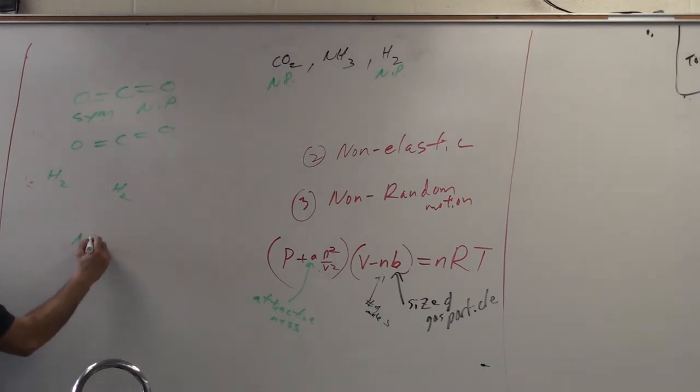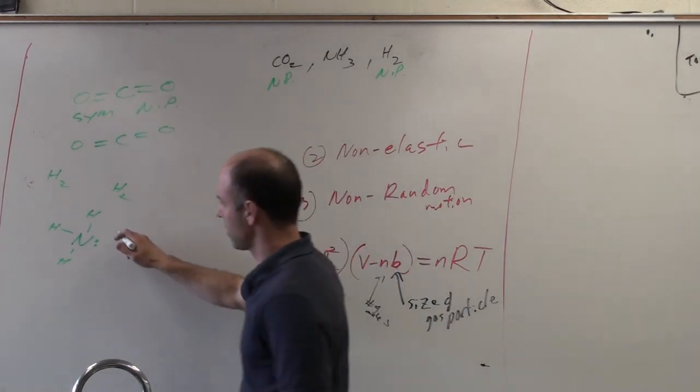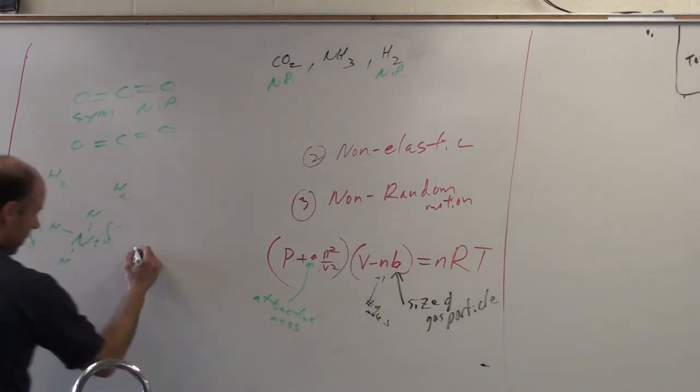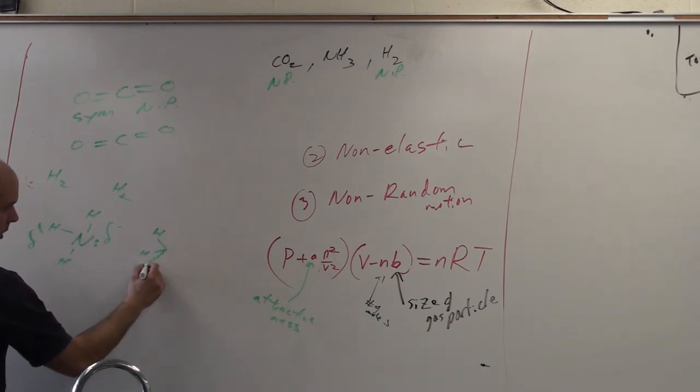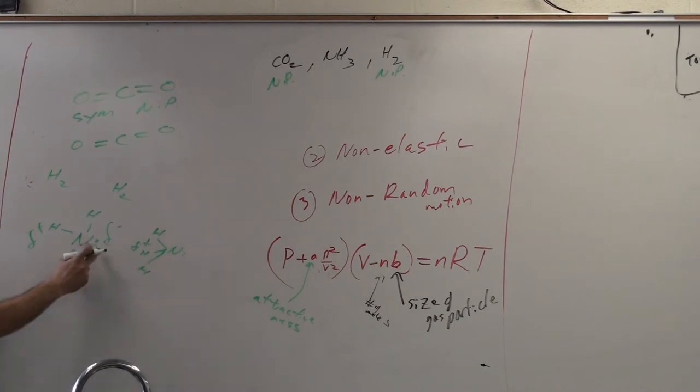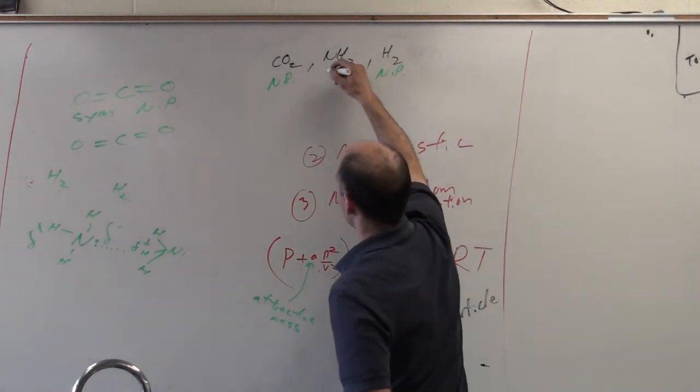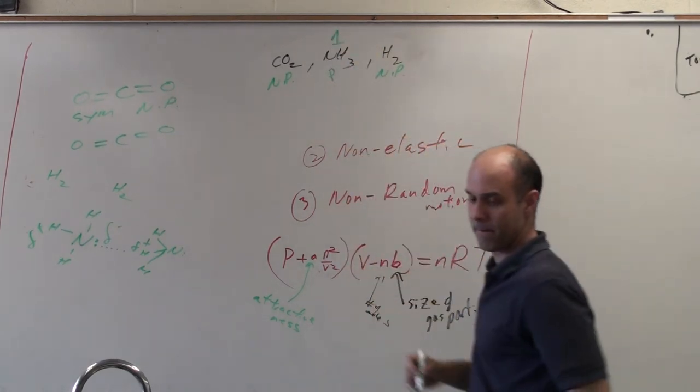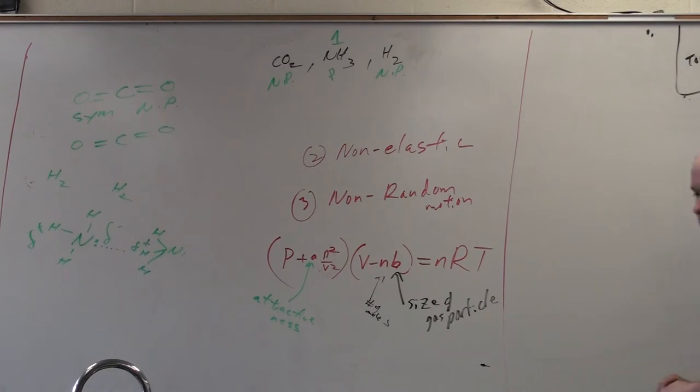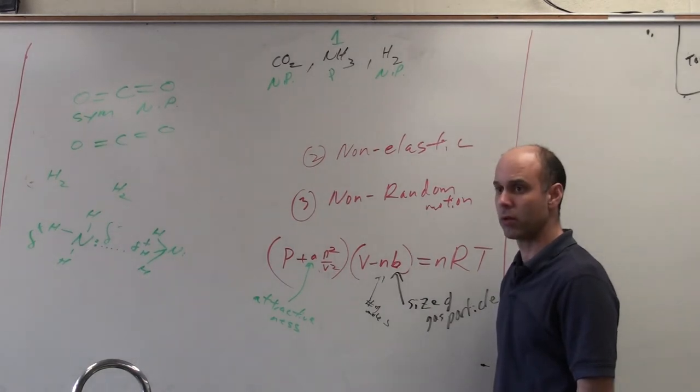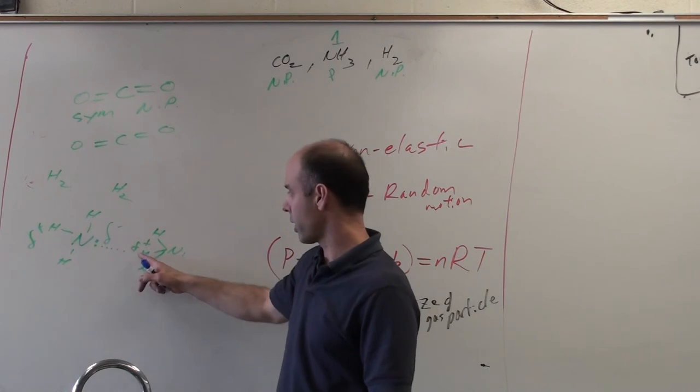But, ammonia has a lone pair of electrons, and that lone pair of electrons is going to make this side partially negative, and this side partially positive. So, ammonia gas does have a reason to be attracted to another one. The partial positive on one side is going to be attracted to the partial negative. So, the one that would have the greatest attractive forces is going to be ammonia. It would be dipole-dipole. Because you have the partial negative on one attracted to the partial positive.